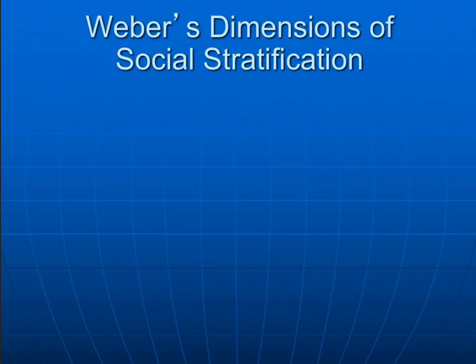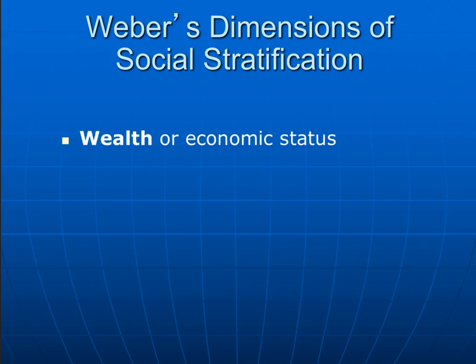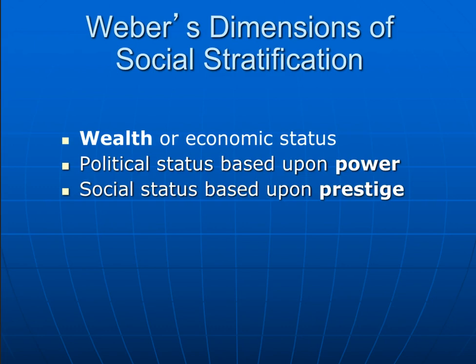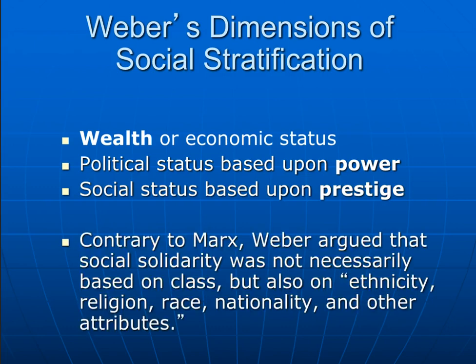Weber identified several dimensions of social stratification: wealth or economic status, political status based on power, and social status based on prestige. Contrary to Marx, Weber argued that social solidarity was not necessarily based on class but also on ethnicity, religion, race, nationality, and other attributes — all of which we are studying in this course on cultural diversity in the United States.